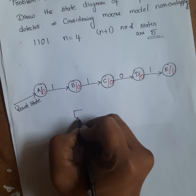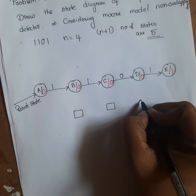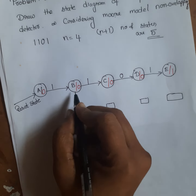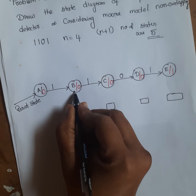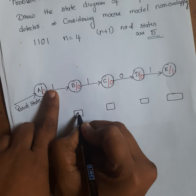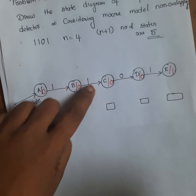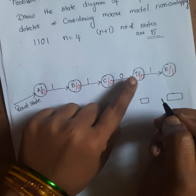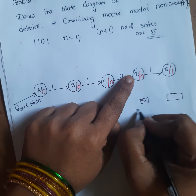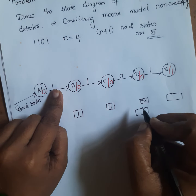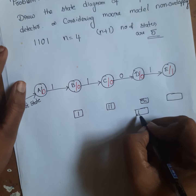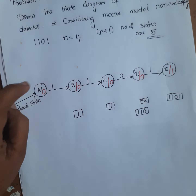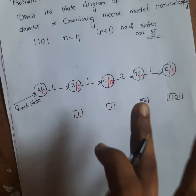Draw the square boxes and write the bits detected at each state. At state B, the bit detected is 1. For state C, the bits detected are 1, 1. For state D, the bits detected are 1, 1, 0. For the last state E, the bits detected are 1, 1, 0, 1. These are the bits detected at each particular state.